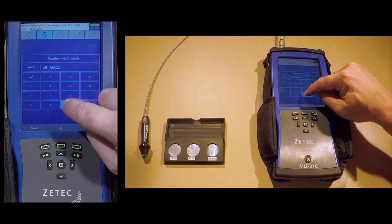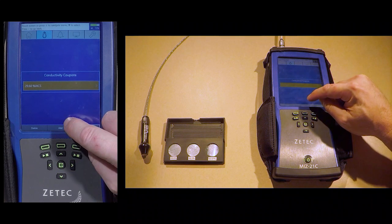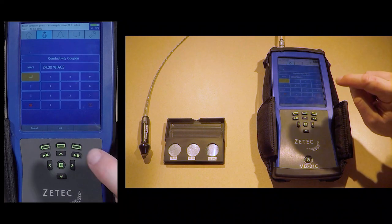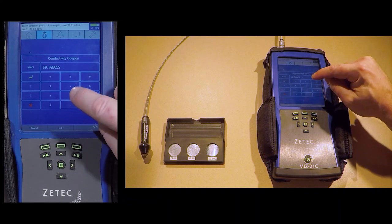For this demonstration, a coupon with the IACS in the high 20s and high 50s will be used for calibration. Our test sample has a conductivity that resides between these two conductivity values.